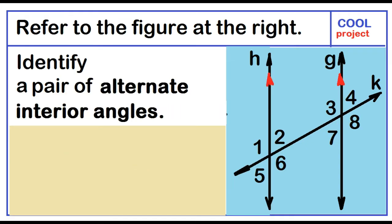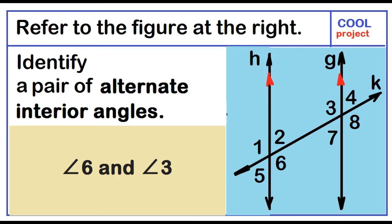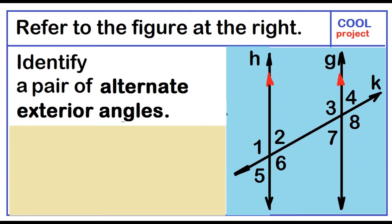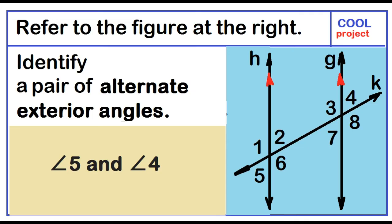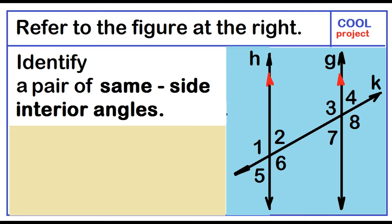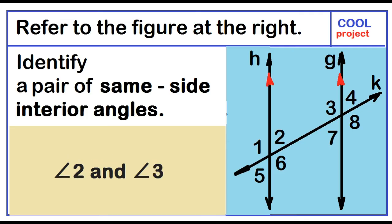Identify a pair of alternate interior angles. The possible answers are angle 2 and angle 7, or angle 6 and angle 3. Identify a pair of alternate exterior angles: angle 1 and angle 8, or angle 5 and angle 4. Identify a pair of same side interior angles: angle 6 and angle 7, or angle 2 and angle 3.